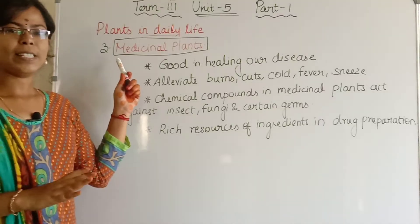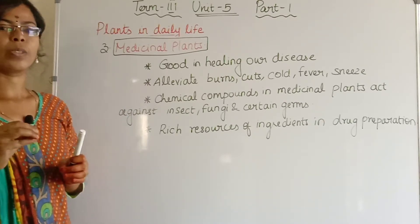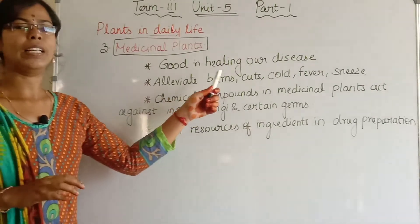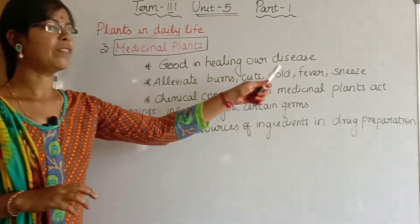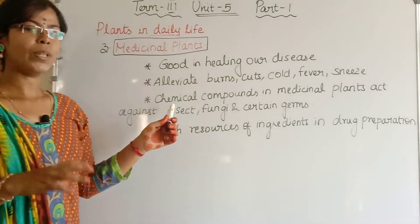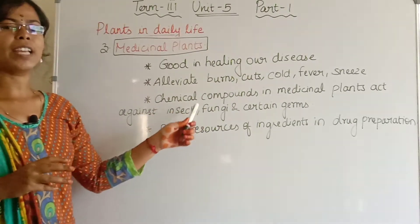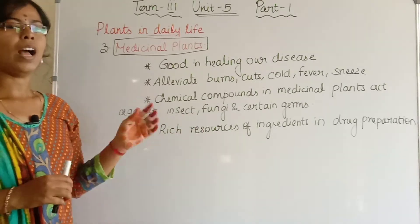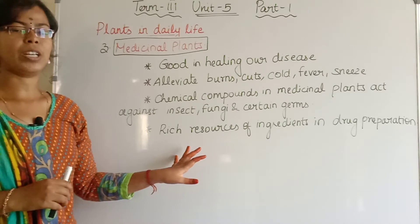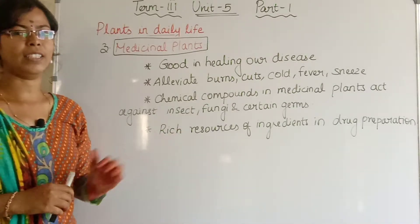The third category is medicinal plants. Some plants around us can cure diseases in our body. They help with burns, cuts, cold, fever and similar ailments. Chemical components present in plants act against insect bites, fungi and germs. Plants are also rich resources for drug preparation — they are used as resources for making medicine.